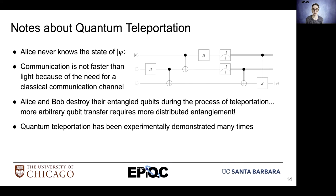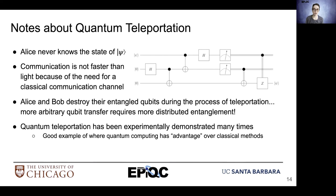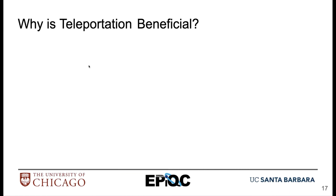Quantum teleportation has been experimentally demonstrated many times in the lab, and it's a good example of where quantum computing shows an advantage over classical methods. In fact, in 2017, qubits were teleported from Earth to space.